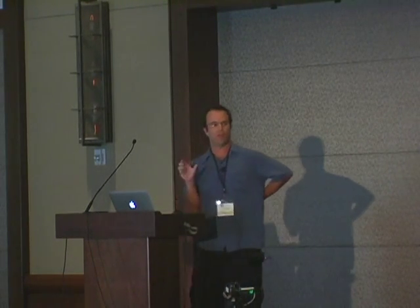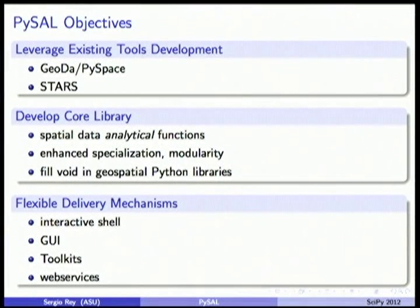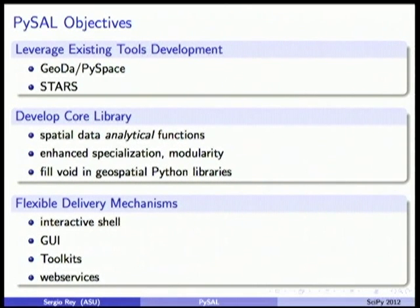Back in 2009, when we started the project, we wanted to leverage earlier work but fill a void in the Python community. Python had made inroads in the GI science community, primarily at the lower ends of the research stack — data integration, management, and geoprocessing. But once you got to statistical analysis — spatial econometrics or exploratory spatial data analysis — there wasn't much there. So we tried to fill that void.